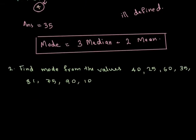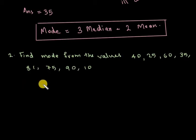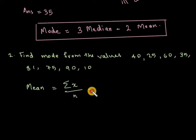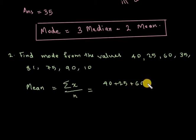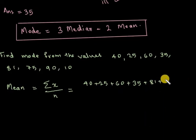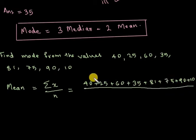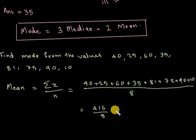If no value repeats, then we apply the formula. Mean is equal to sigma x divided by n. Adding the given values, we get 416 divided by 8, which gives mean equal to 52.